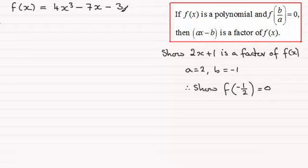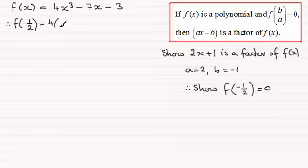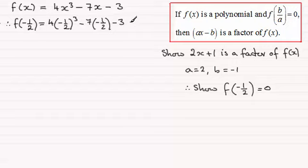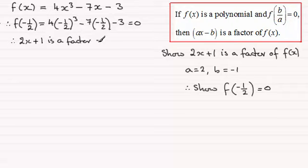So we say that f(−1/2) equals: substituting x for −1/2, we get 4 times (−1/2) cubed, minus 7 times (−1/2), minus 3. If you work that out you do get zero. Therefore we can say that 2x plus 1 is a factor of f(x).